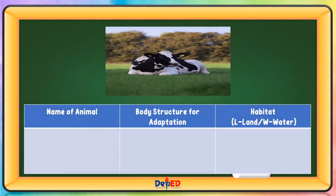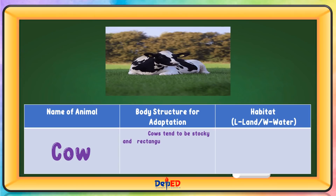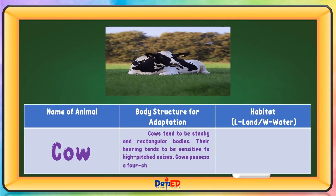Name of animal: Cow. Body structure for adaptation: Cows tend to have stocky and rectangular bodies. Their hearing tends to be sensitive to high-pitched noises. A cow possesses a four-chambered stomach. Habitat: Land.